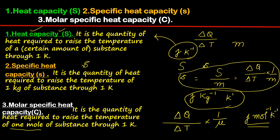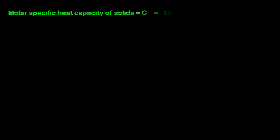The formulas for calculating heat capacity, specific heat capacity, and molar specific heat capacity are now established. We will continue with molar specific heat capacity of solids, water, and gases in this chapter. First, we take up molar specific heat capacity of solids. There is a derivation: molar specific heat capacity C equals 3R, where R is the universal gas constant.